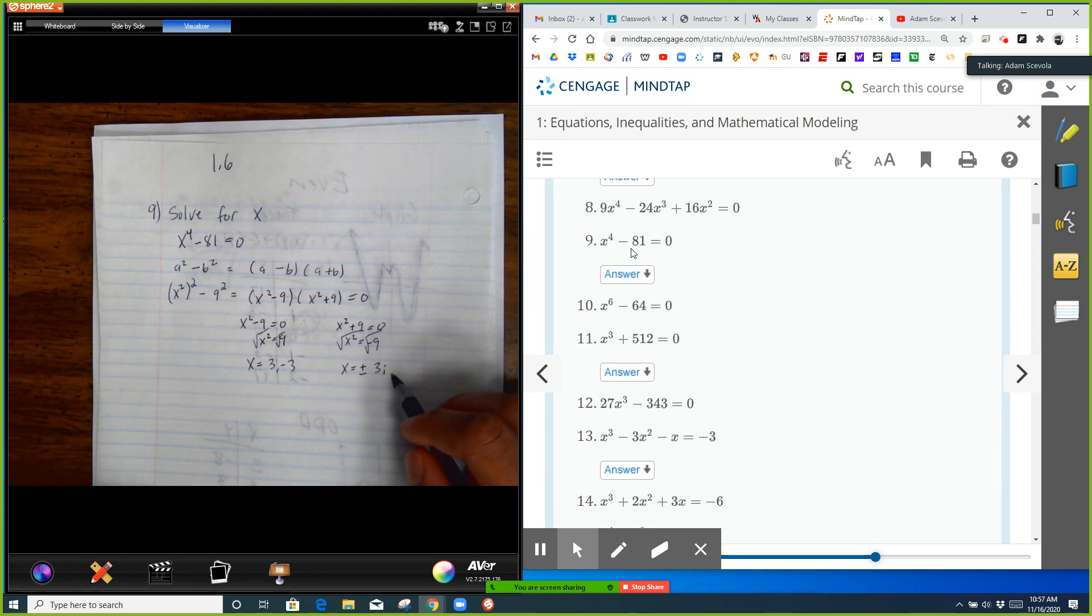A good rule of thumb is a polynomial of degree n will have n total solutions. This is a fourth degree polynomial. That's why we got four solutions here: plus or minus 3i, plus or minus 3.